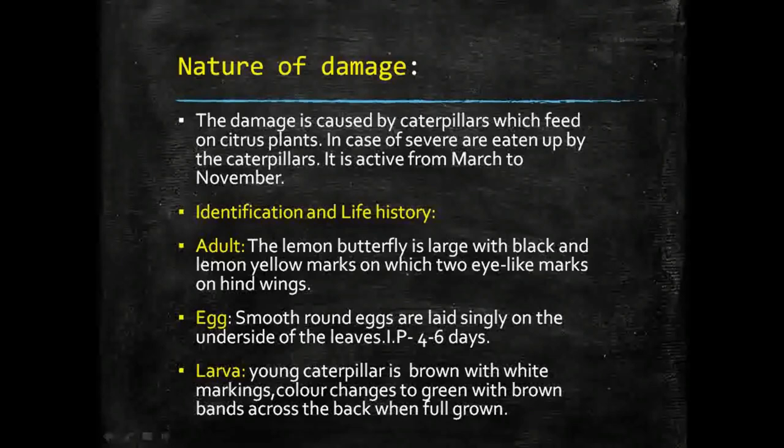The eggs are smooth and rounded in shape, laid singly on the underside of leaves. The incubation period is four to six days, after which they hatch into a young caterpillar, or larva — the larval stage in Lepidoptera is called the caterpillar stage.